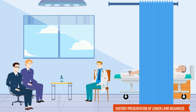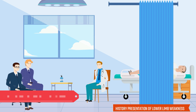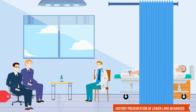The patient also gives history of respiratory tract infection along with fever about 5 days before the development of weakness of the limbs. There is no history of trauma, vaccination, surgery, or joint pains before the development of weakness.